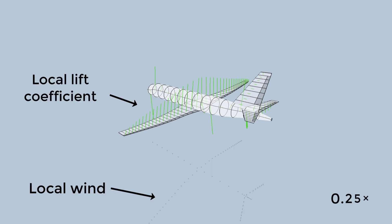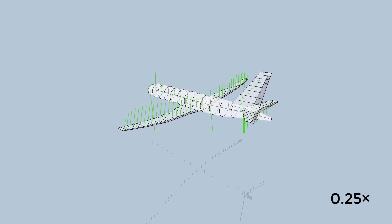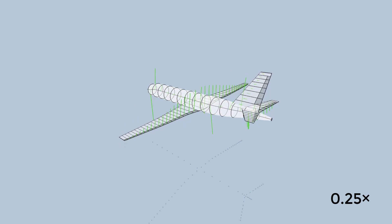Active gust load alleviation is an important technology for reducing loads on future commercial airplanes so that the structure can be designed to be lighter in order to save fuel.